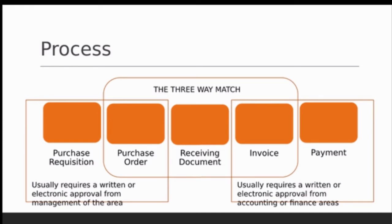These are all important things for the auditor to understand. On the invoice and payment side, there will usually be a written or electronic approval, which often comes from the accounting or finance area to confirm whether funds are available to make that payment. Later, I'll show you in QuickBooks how people determine whether they have the funding to make payments or meet cash requirements.